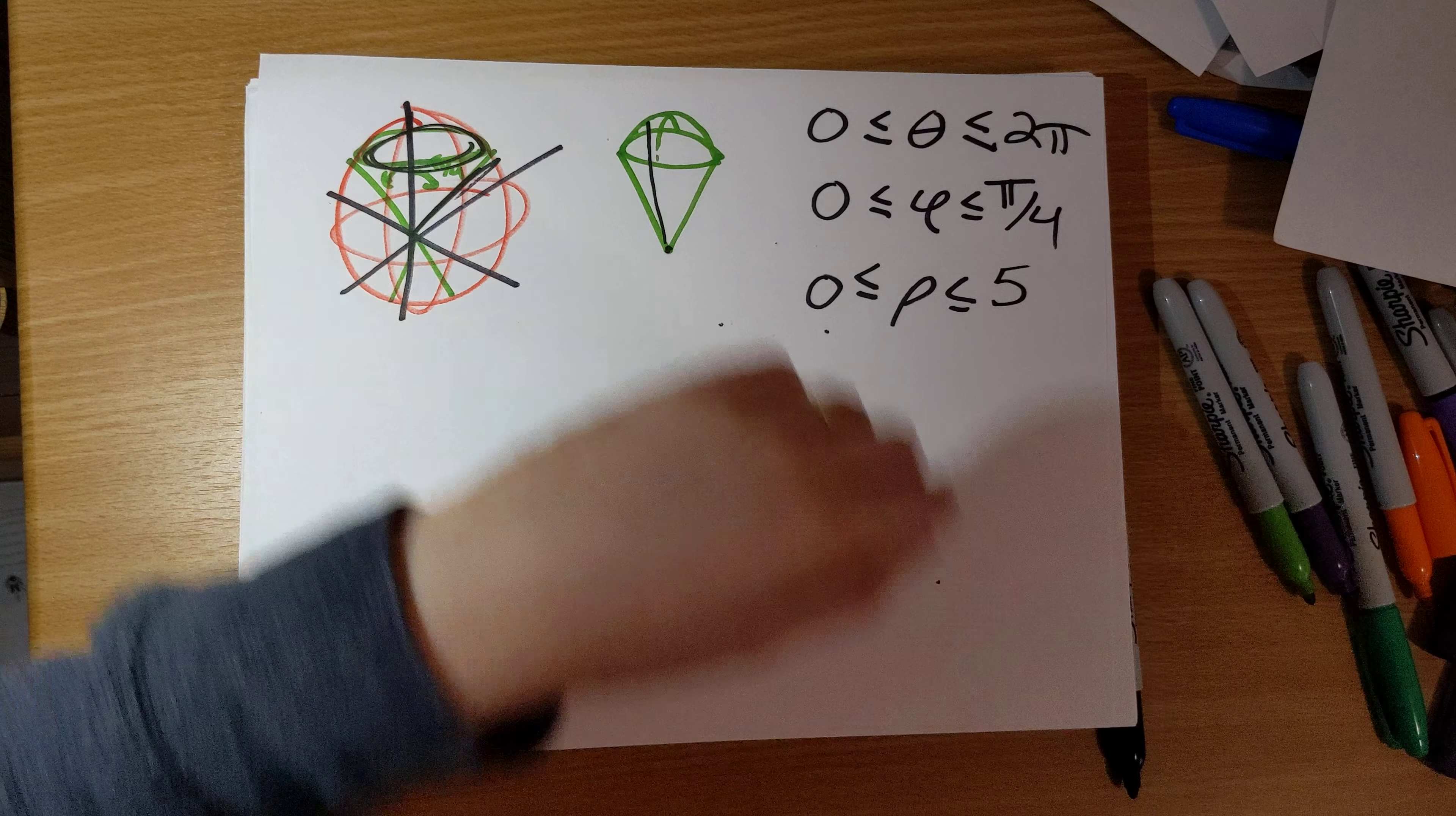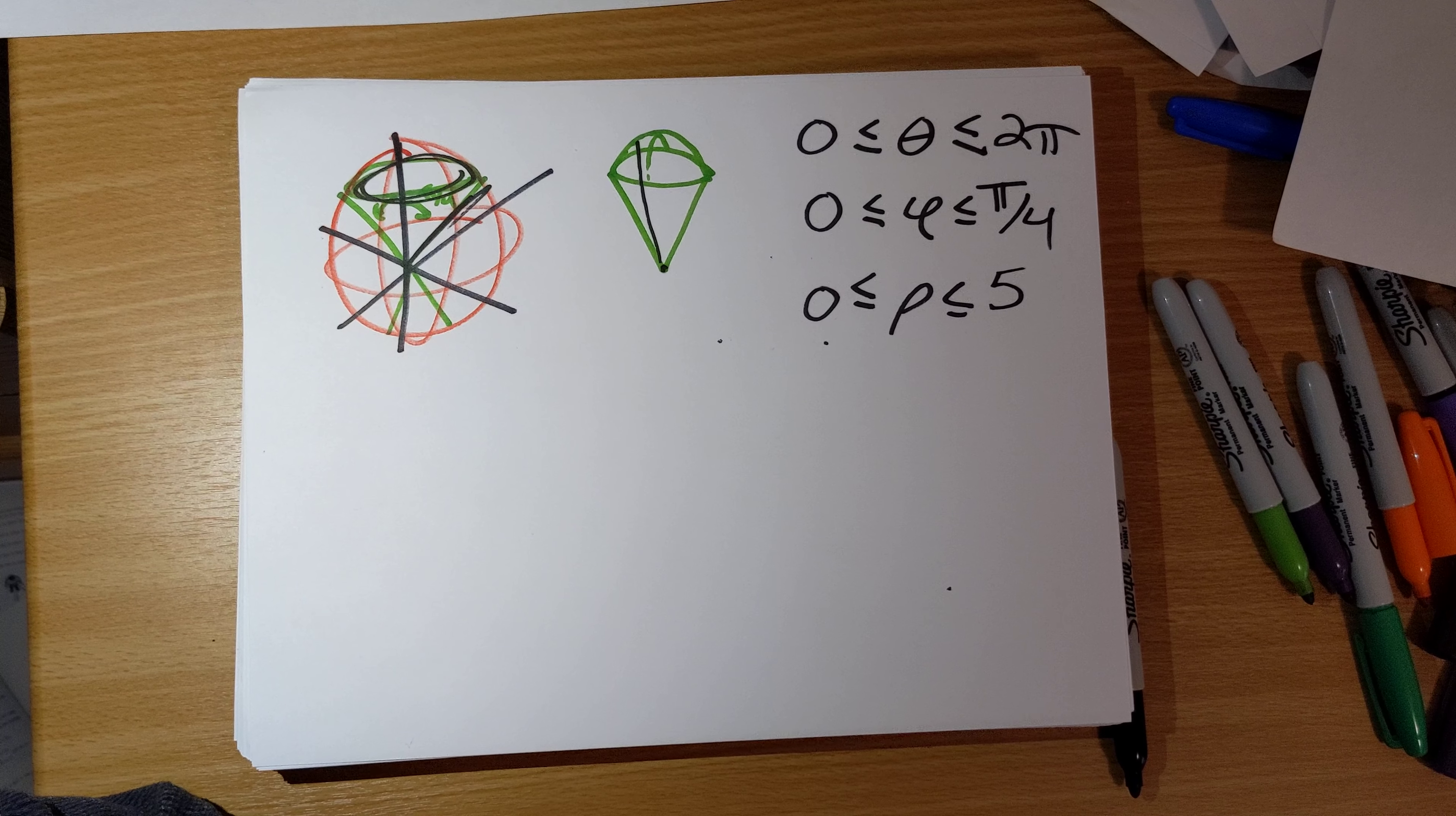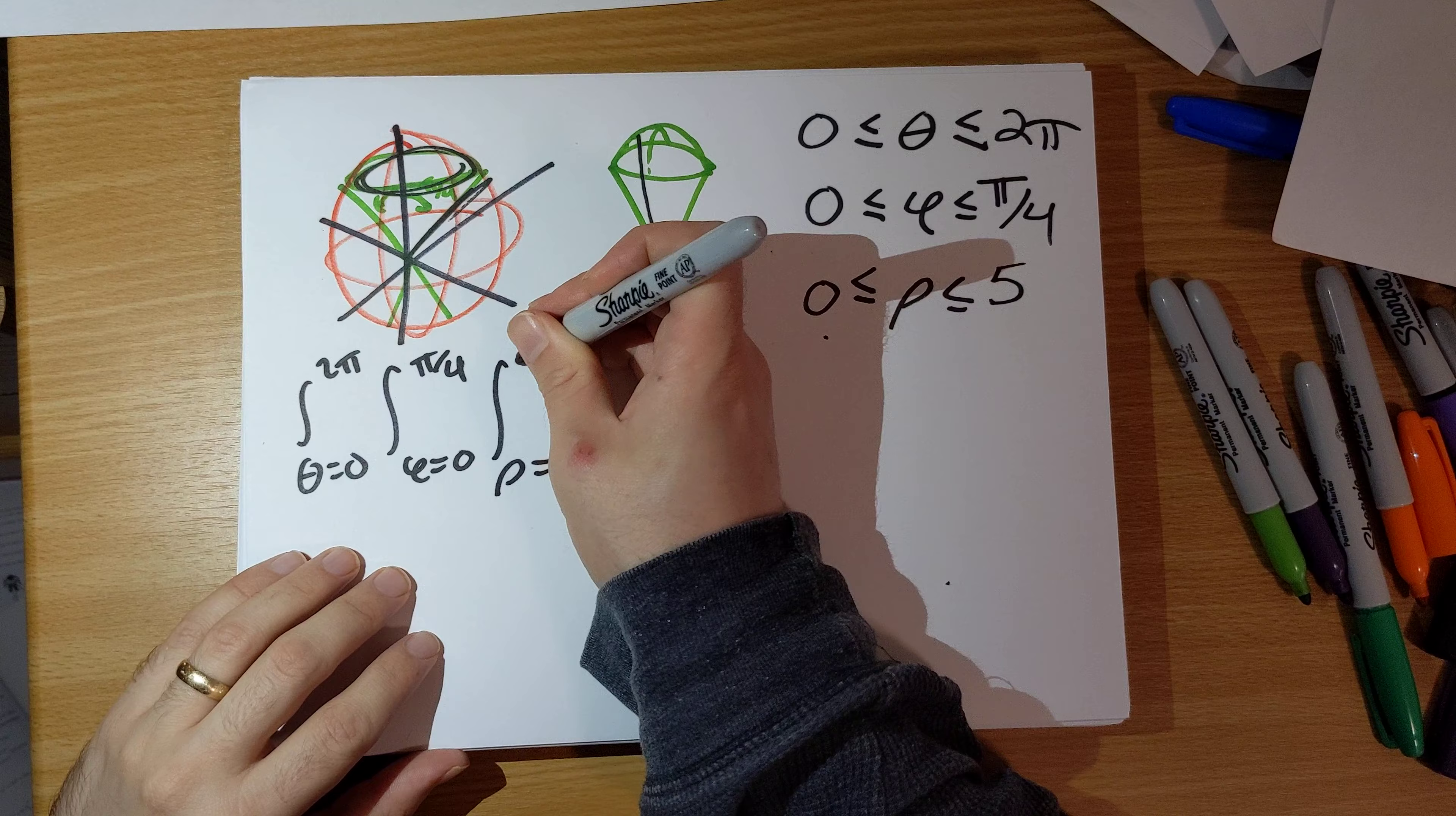So something that looked complicated here, you know, integrating f, x, y, z on this region, you know, this looks like a pretty complicated looking region here. When we convert over to spherical coordinates, all of a sudden we have constant bounds on all three theta and phi and rho. And so our life becomes very, very easy. Theta runs from 0 to 2 pi. Phi runs from 0 to pi over 4. Rho runs from 0 to 5.